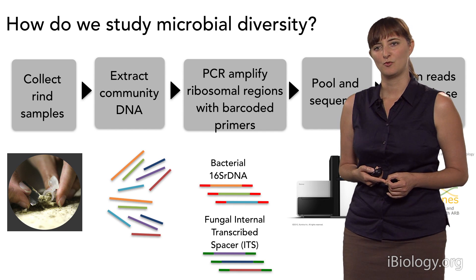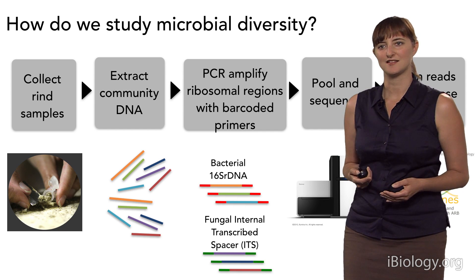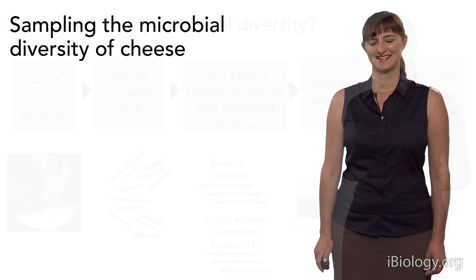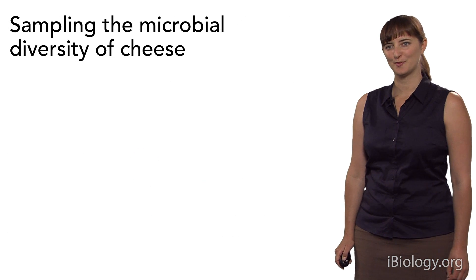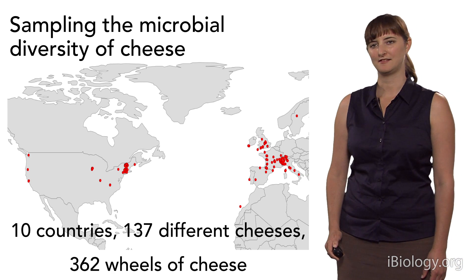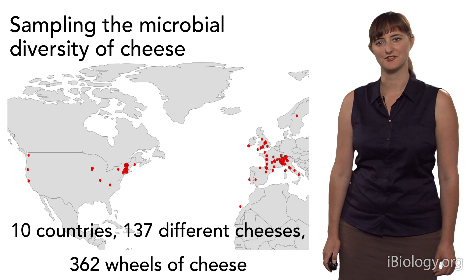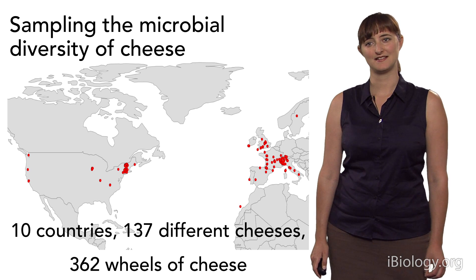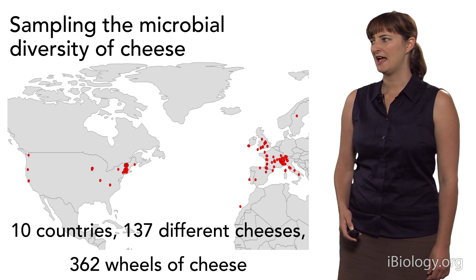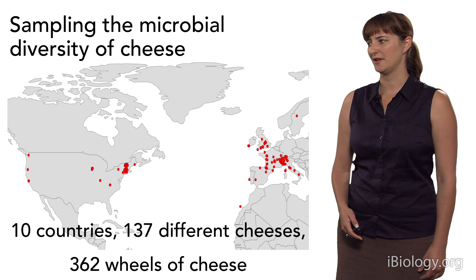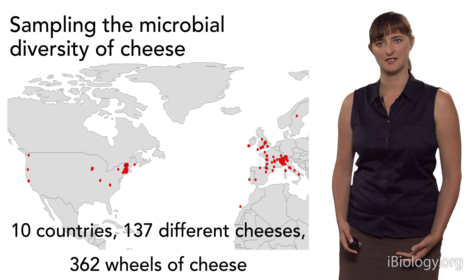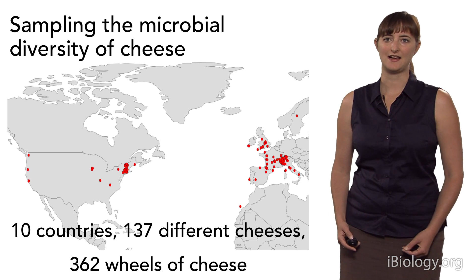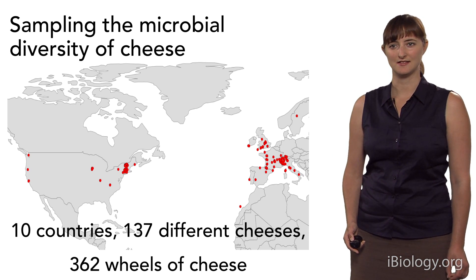Using this method, we wanted to look as broadly as possible at what type of diversity is present in cheeses around the world. To sample the microbial diversity of cheese, we collected samples from 10 different countries, 137 different types of cheese, and 362 wheels of cheese. We took each of these samples through this protocol to look at the types of bacteria and fungi present in each of these communities.